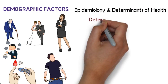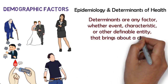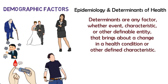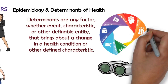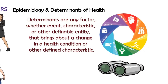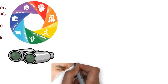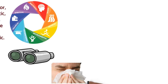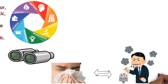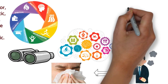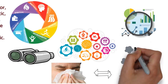Epidemiology and determinants of health: determinants are any factor — whether events, characteristics, or other definable entities — that brings about a change in a health condition or other defined characteristics. Epidemiology is also used to search for determinants, which are the causes and other factors that influence the occurrence of disease and other health-related events. Epidemiologists assume that illness does not occur randomly in a population but happens only when the right accumulation of risk factors or determinants exists in an individual.